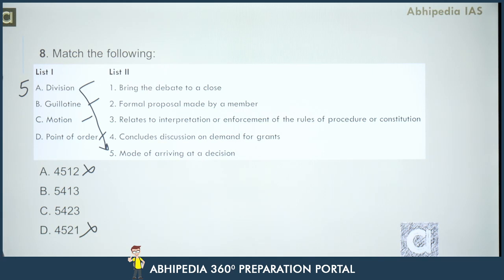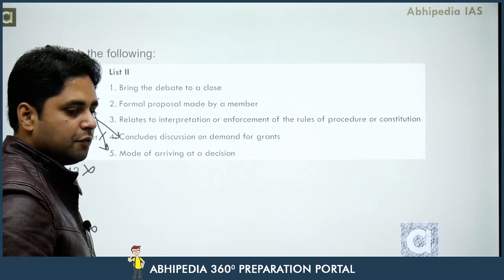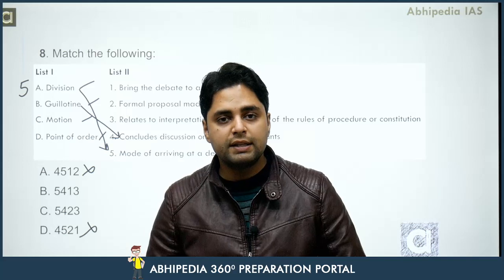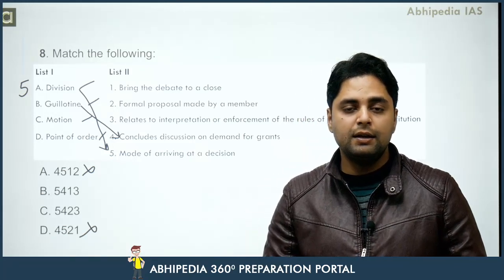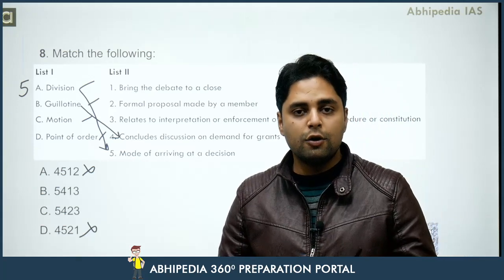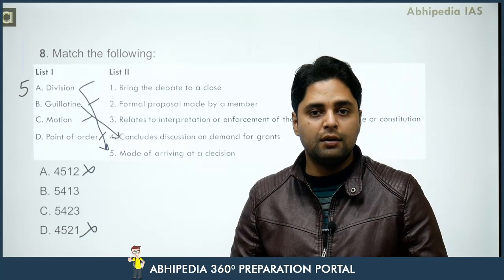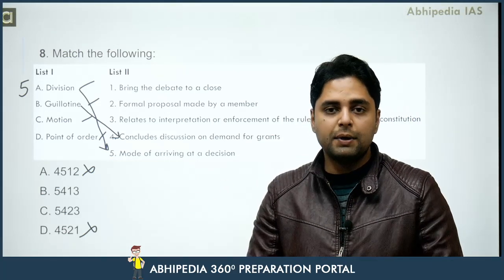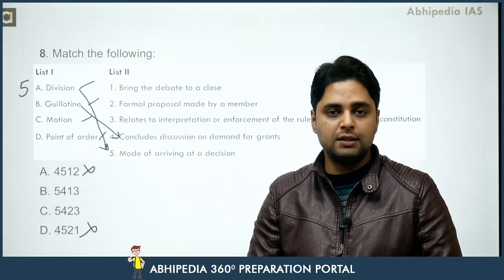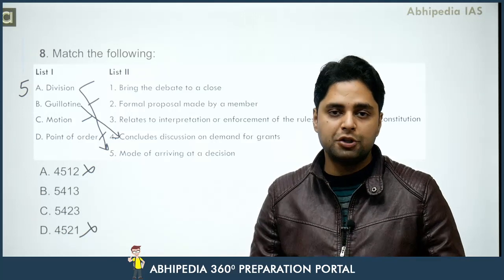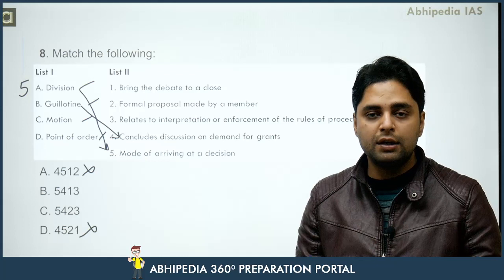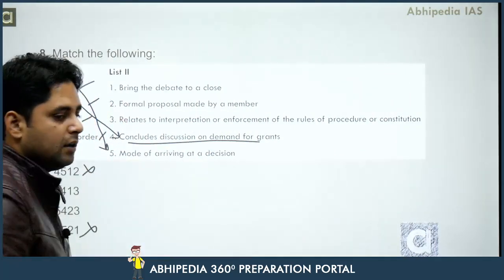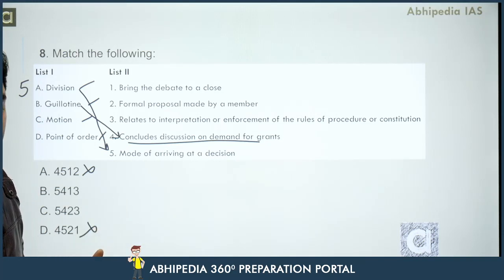Guillotine ka matlab hota hai to conclude discussion on a demand for grant. The word guillotine comes from the French Revolution of 1789 - it was a device used for capital punishment, decapitation. Parliamentarily, guillotine means: jitni bhi demands ho rahi hain grant ke liye jo ki budget ka process hai, unko ek dam se conclude kar dena, ek hi baar mein un par vote karana. That is known as guillotine. So guillotine's answer is four.